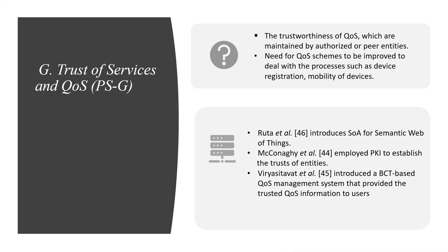The prevalence of IoT devices has led to ubiquitous services worldwide. Services with similar functionalities will be available and can be selected optimally based on QoS. However, an important issue is the trustworthiness of QoS, maintained by authorized or peer entities. There is a need for QoS schemes to deal with processes such as device registration and mobility of devices. Ruta presented a semantic web of things, McAuque employed KPI to establish the trust of entities, and Virya Sittwat introduced a blockchain-based QoS management system that provided trusted QoS information to users.